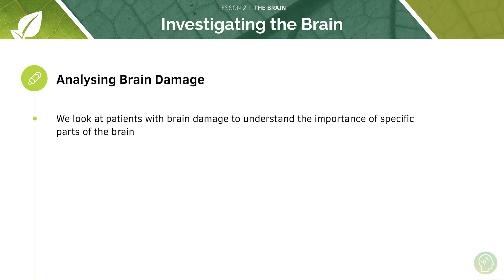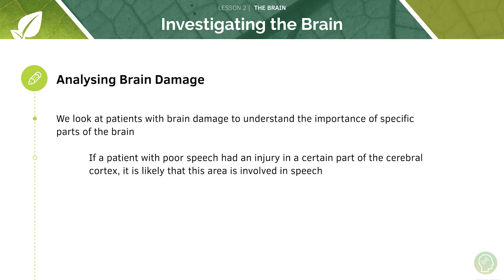We can also learn a lot from patients with brain damage. If we know which specific part of the brain is damaged and match this to how they are behaving — changes in behaviour or functions they lack — we can understand the importance of specific parts of the brain. For example, if a patient with poor speech had an injury in a certain part of the cerebral cortex, it is very likely that area is involved in speech. These are things that have happened historically and continue to happen today.